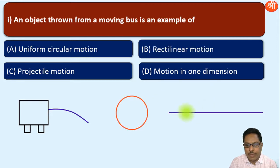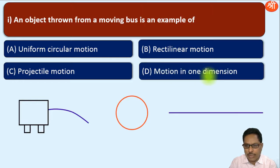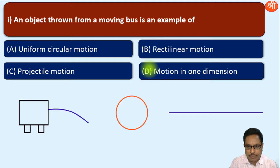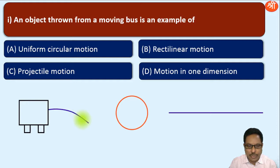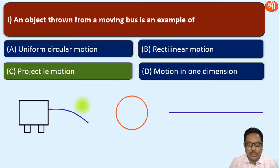For rectilinear motion, the object should move along a straight line path, but this path is not straight. Motion in one dimension also means motion along a straight line, which is the same as rectilinear motion — so options B and D mean the same thing. This motion is neither rectilinear nor one-dimensional. Therefore, the only correct option is C — projectile motion. In projectile motion, the object moves along this type of curved path, and that is exactly what we see here.